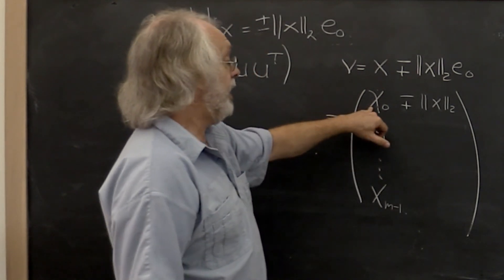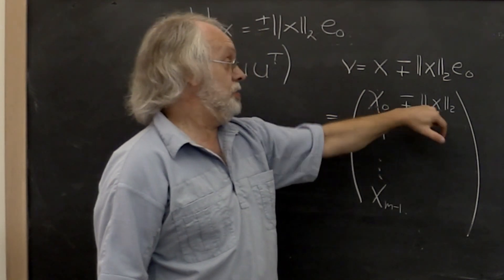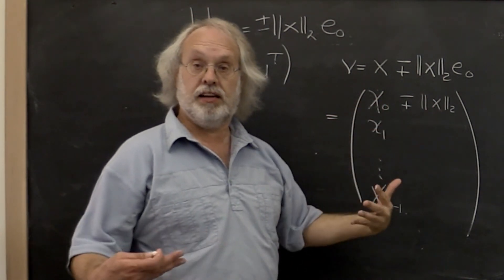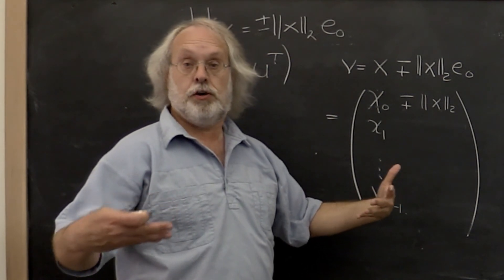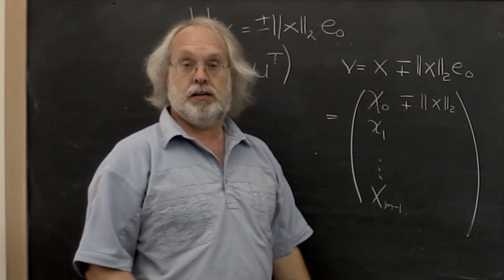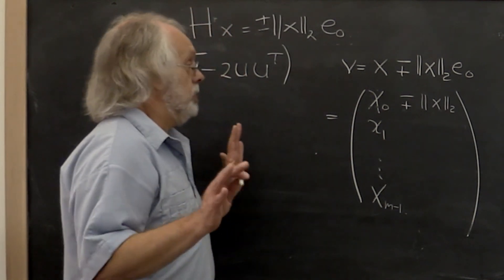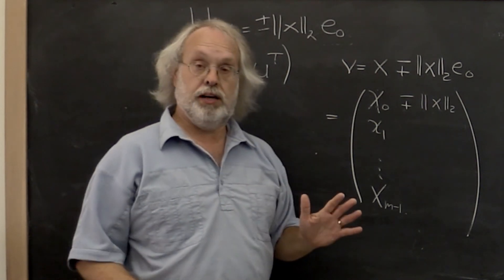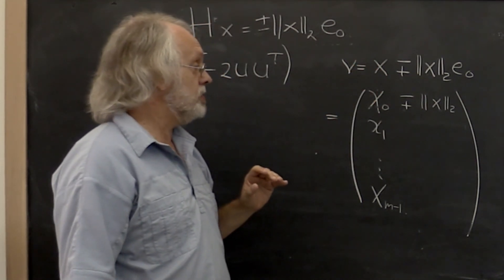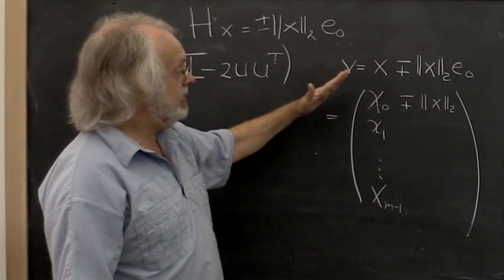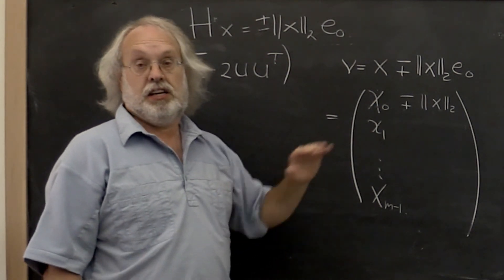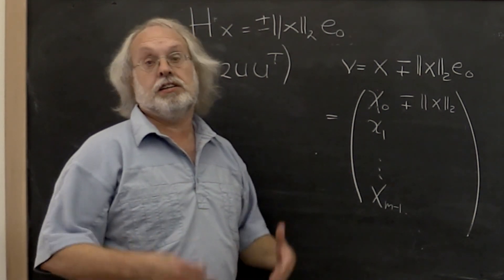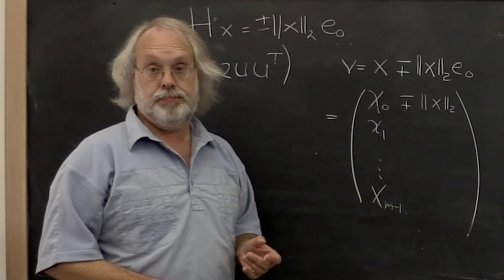Alternatively, if chi₀ is approximately equal to minus the 2-norm of x, then you would want to subtract off the 2-norm of x, because again that means you're adding two values of the same sign. You need to be very careful with this, because if catastrophic cancellation happens, the mirror is not placed just right, and the Householder transform is not quite the one you want. So this is actually important.